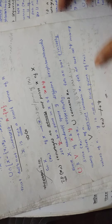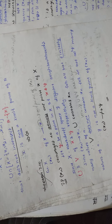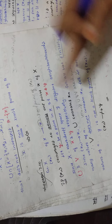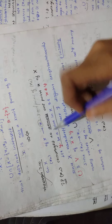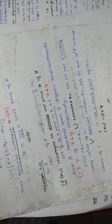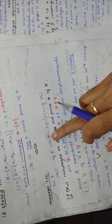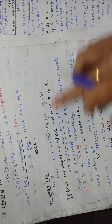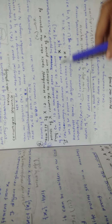Let XN be a sequence of capital X that converges to a point, small x. You have to write in brackets that this small x is the limit point of XN. So: XN is a sequence of X that converges to x, where x is the limit point of XN.